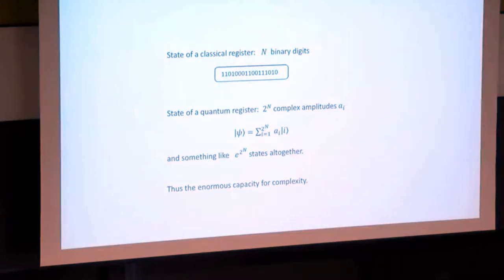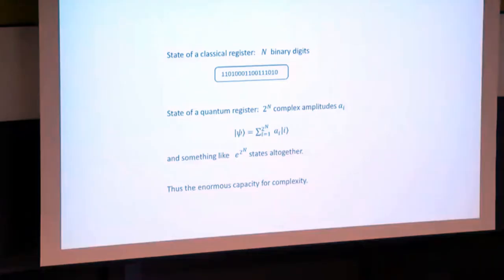What about a quantum register? A register made out of quantum mechanical qubits. How complicated is it? Well, each one of these states of the classical computer is itself a possible state of a quantum computer, but the most general state of a quantum computer is a superposition of these.